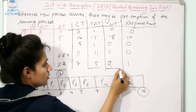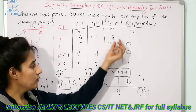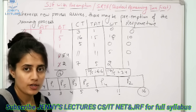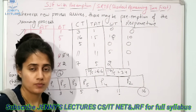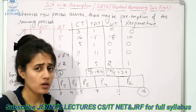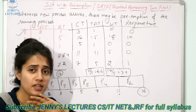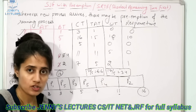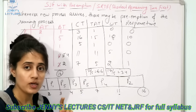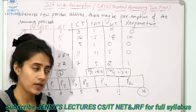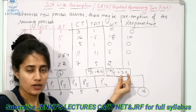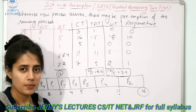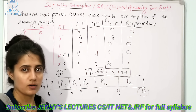The average waiting time for this algorithm is 3.4. SRTF gives the minimal average waiting time — meaning no matter what algorithm you apply to this set of processes, you will never get an average waiting time less than 3.4. That is why SRTF is known as the optimal solution. One more example on SRTF will be discussed next. Take care, bye bye.